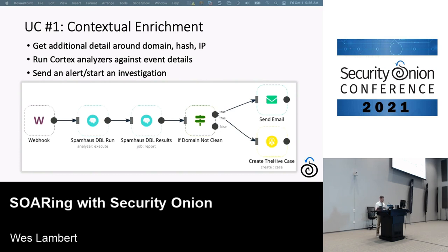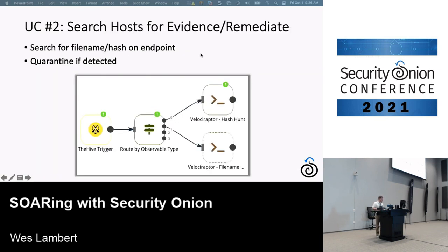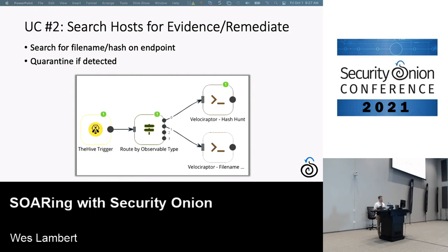The second use case is searching hosts for evidence and then acting on it — performing remediation or other response actions. We can search for a file name or hash on an endpoint or across all endpoints at once, quarantine if detected, remove scheduled tasks. This example uses TheHive webhooks — we check the observable type, and if it's a file name we do one thing, if it's a hash we do another, branching in many different directions.